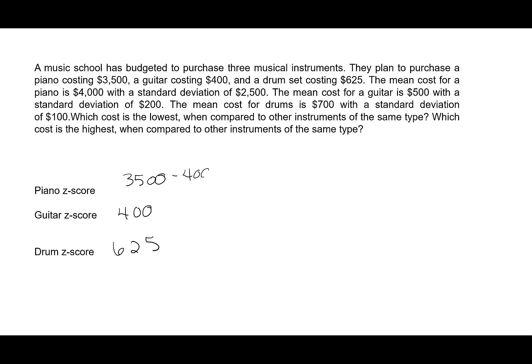The mean cost for a piano is 4,000. So I'm going to go ahead and say subtract because we see that difference. And there's a standard deviation of 2,500. So I'm going to divide by 2,500. The mean cost for the guitar is 500. So let's subtract 500. And the standard deviation is 200. And then the mean cost of drums is 700 and a standard deviation of 100. So each time we're comparing kind of, did we get a good deal?